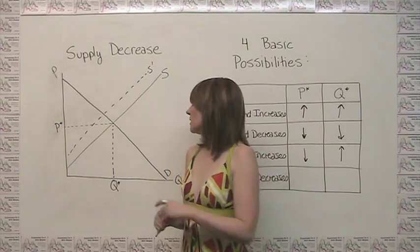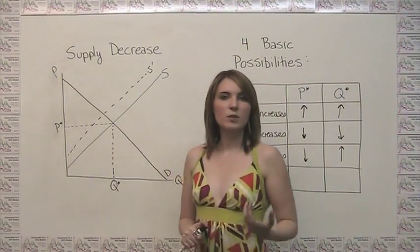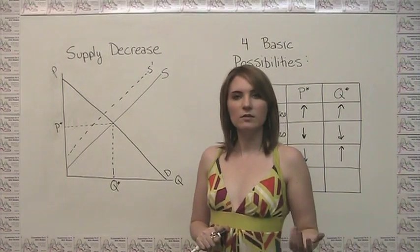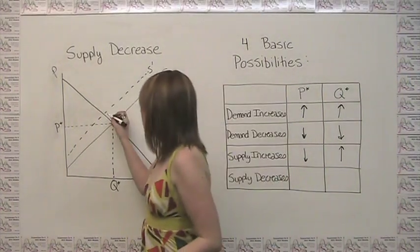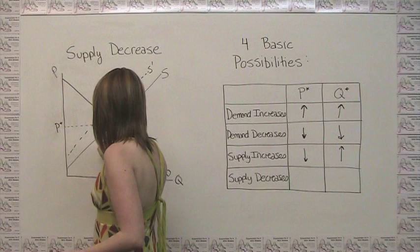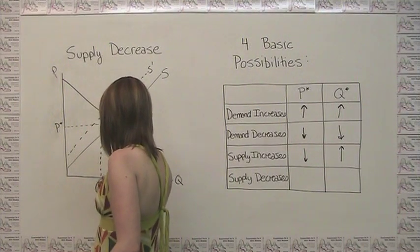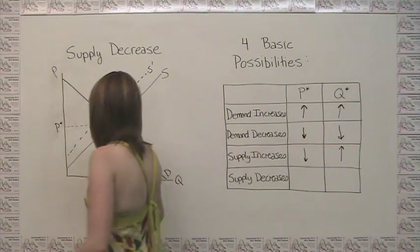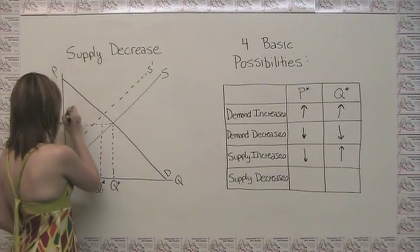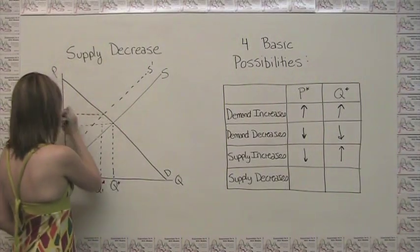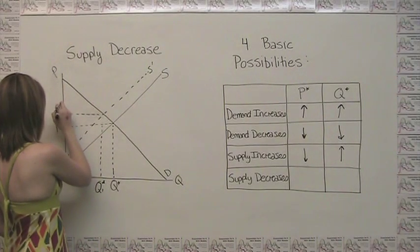So here, our new equilibrium is where this new supply curve intersects with the demand curve. And we notice then that we're at an equilibrium quantity Q1 here, and an equilibrium price P1 here.